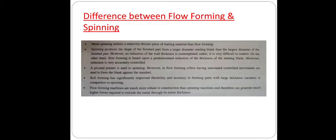The differences between flow forming and spinning are: first, metal spinning utilizes a relatively thinner piece of starting material than flow forming. Second, spinning produces the shape of the finished part from a larger diameter starting blank, with no intended reduction of wall thickness, and it is very difficult to control. In contrast, flow forming is based upon a predetermined reduction of the thickness of the starting blank, and that reduction is very accurately controlled.